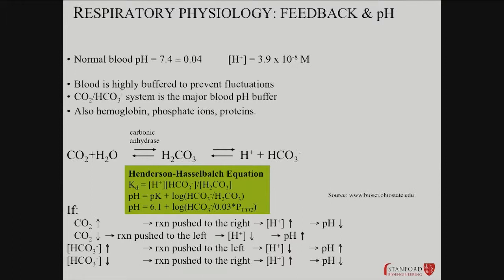This relationship is important to keep in mind — it's the Henderson-Hasselbalch equation, basically derived from the association constant of carbonic acid. Solving for pH gives you 6.1 plus the log of the ratio of HCO3⁻ to PCO2. This is pretty useful because it lets you think about how blood pH, partial pressure of CO2, and bicarbonate all relate to each other.